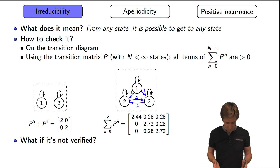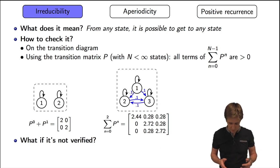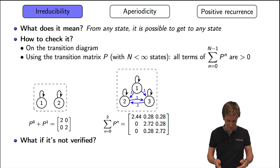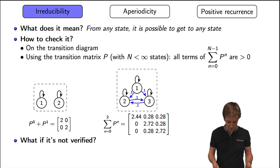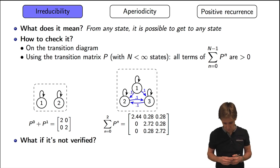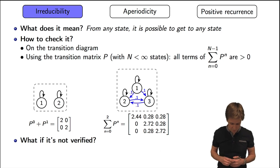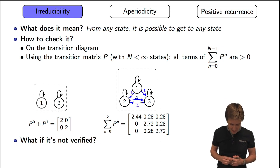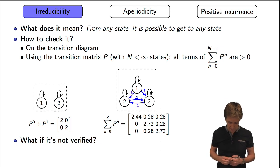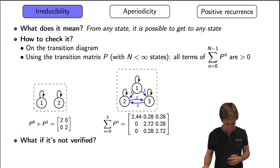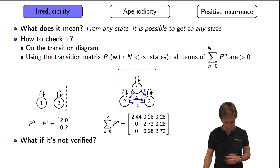What was important was just that the transition probabilities were strictly positive. Here I needed to take some specific values to compute the matrix. The blue arrows have probability 0.1, and you can compute the probabilities for the black arrows based on that.